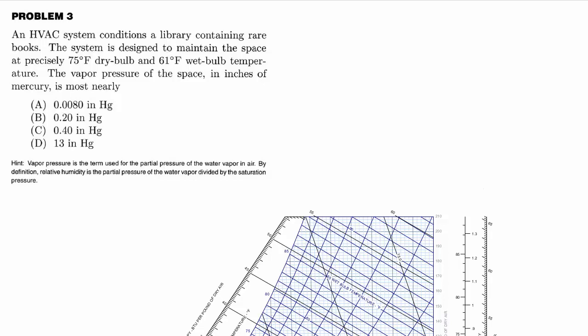Hi, welcome back to mechanical PE exam prep. This is problem 3 from 6-minute solutions for the mechanical PE exam, HVAC. An HVAC system conditions a library containing rare books. The system is designed to maintain the space at precisely 75 degrees dry bulb and 61 degrees wet bulb. The vapor pressure of the space in inches of mercury is most nearly what?